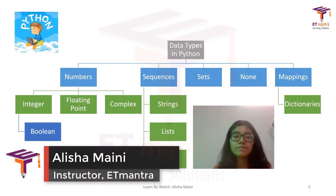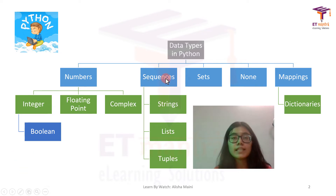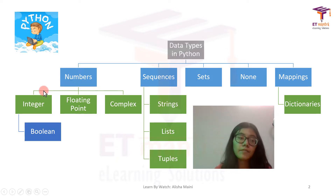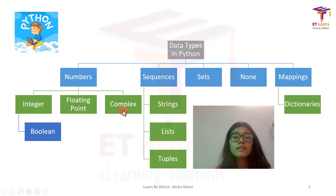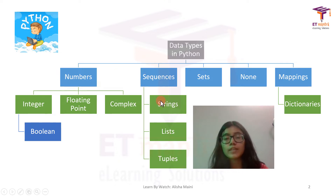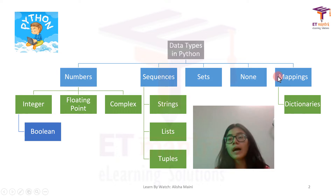Let's start with data types in Python. These are the data types: we have numbers, we have sequences, we have sets, none, and mappings. Inside numbers we have integer, which also has boolean values — true and false. Then inside numbers we also have floating point and complex numbers. In sequences we have strings, lists, and tuples. There is nothing additional inside sets and none, but we do have dictionaries inside mapping. Let's see each one of them particularly.